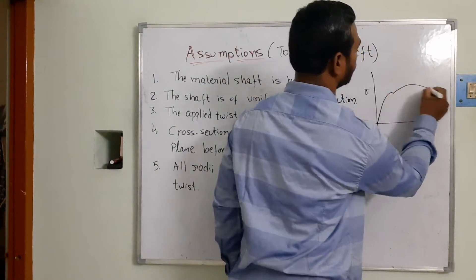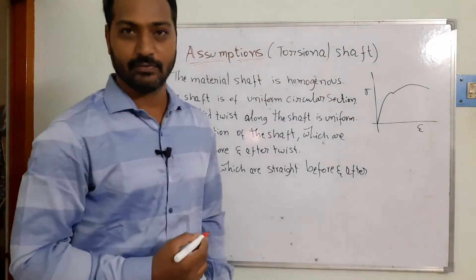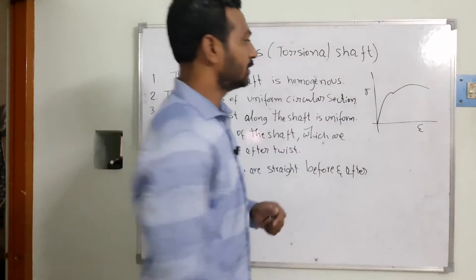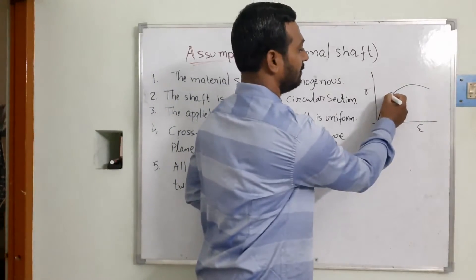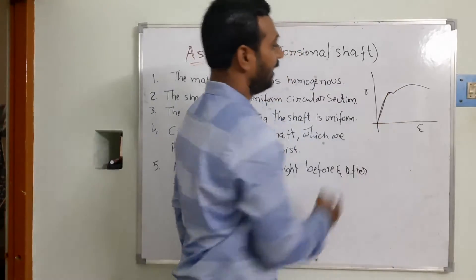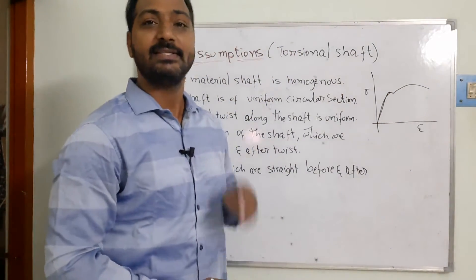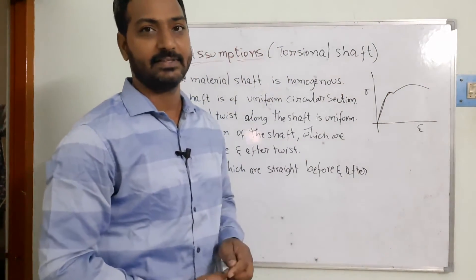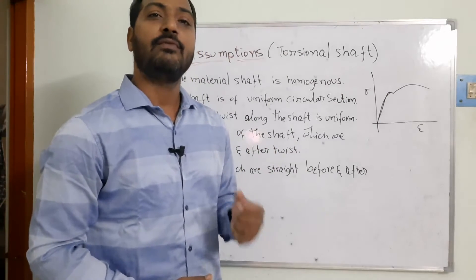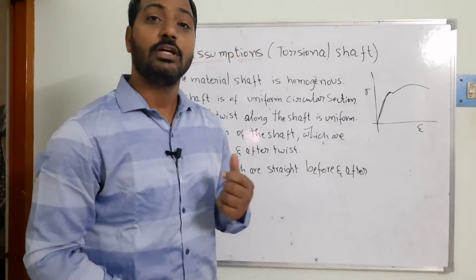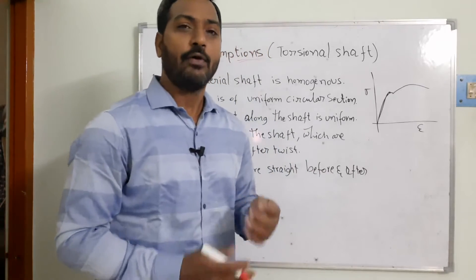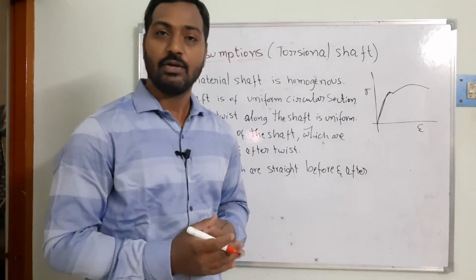For brittle or ductile materials, we get a certain type of curve. The proportional limit exists up to a certain point — either the elastic limit or proportional limit. Up to that point, when I draw a line, it matches exactly — linearity exists. But after that, the material shows non-linear behavior, called a nonlinear curve.